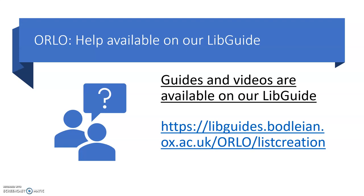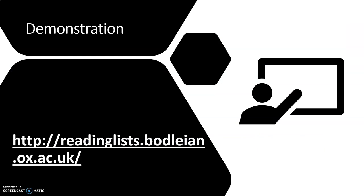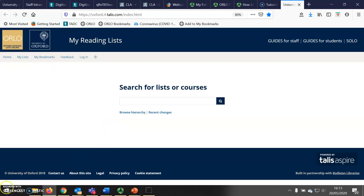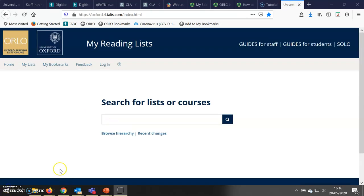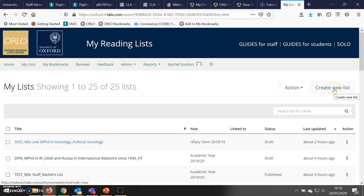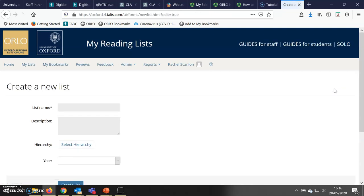Further guides and videos are available on our libguide at the link shown, also by clicking 'Guides for Staff' at the top of any Orlo reading list. I will now go to Orlo and create a reading list from scratch. When I get to Orlo, I need to log in with my single sign-on. Once I have logged in, I go to My Lists and on the top right I can click 'Create New List'.